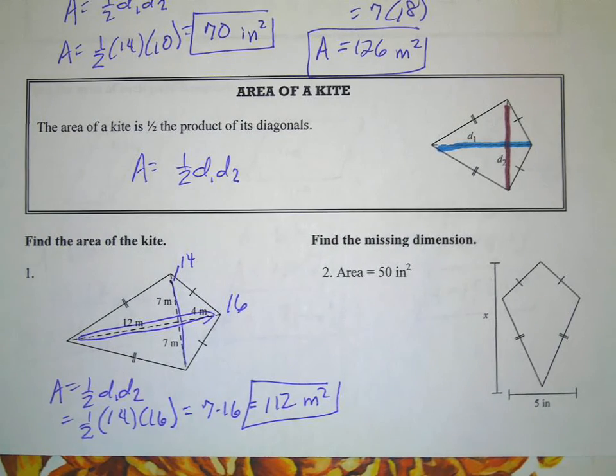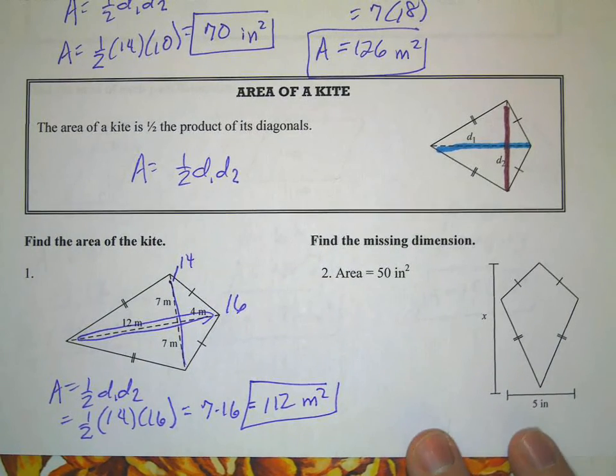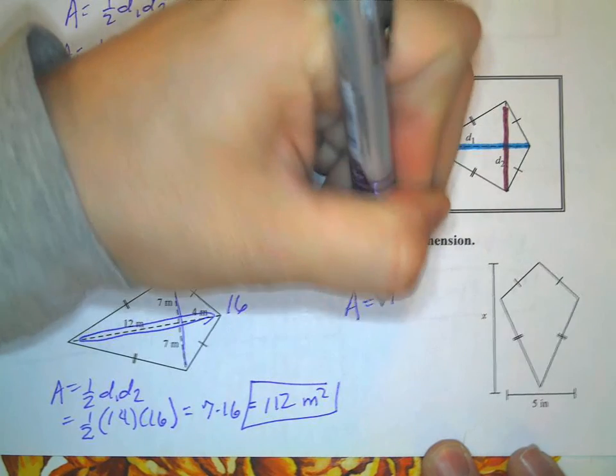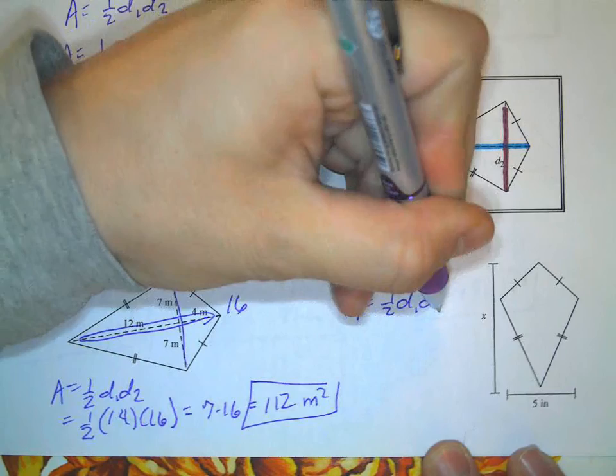And then here it says find the missing dimension. So we're starting with the formula. Area is 1/2, D1, D2. The area is 50.